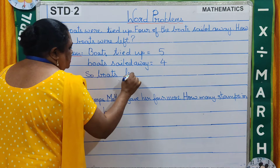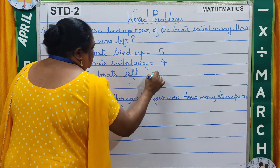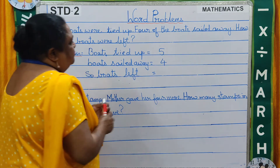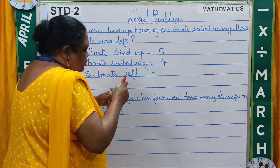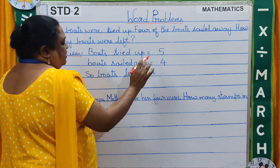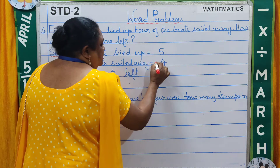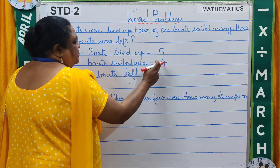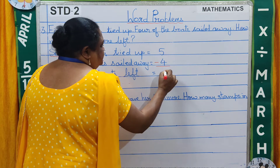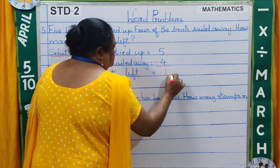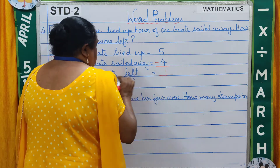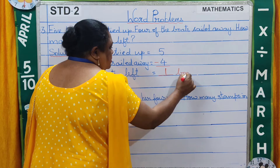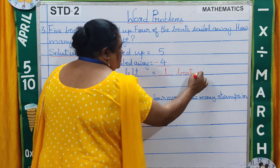Boats left is equal to — what will we do, children? There were 5 boats tied up and 4 boats sailed away, so we are going to subtract. 5 minus 4 is equal to 1. There was only 1 boat left.